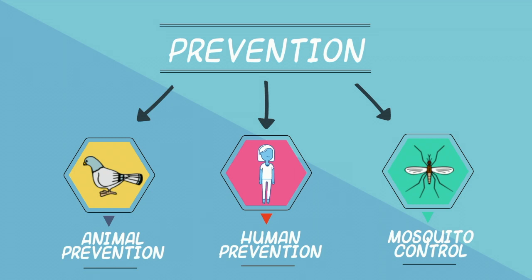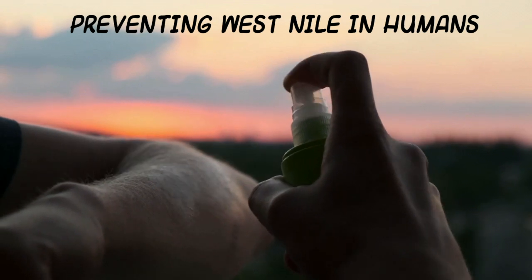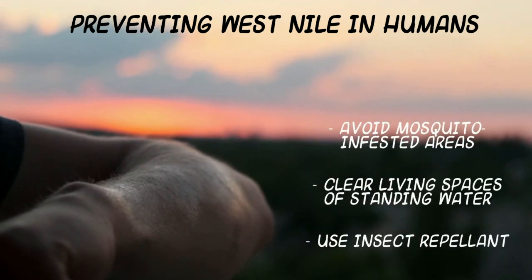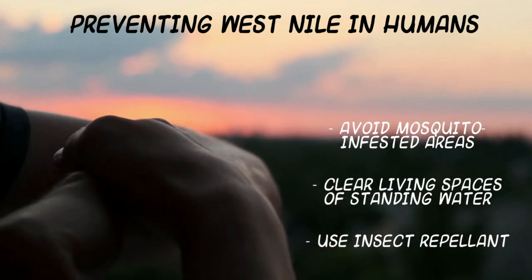Since mosquitoes pick up the infection from infected horses and birds, active animal health surveillance systems were established to detect new cases in these animals and to warn public health authorities. In regards to human prevention, efforts are being made to raise awareness of the risk factors and to educate people about the measures they can take to reduce exposure to this virus.